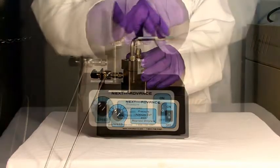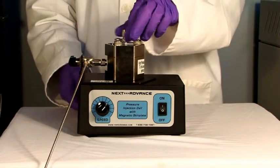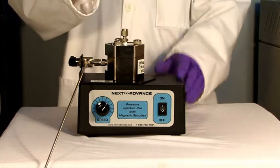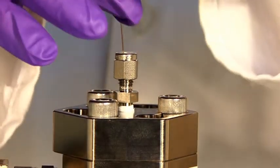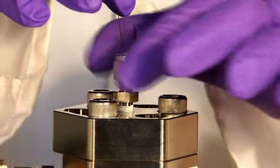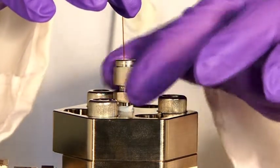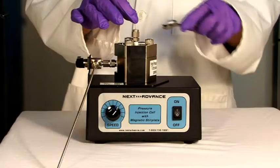To insert the capillary, loosen the nut covering the ferrule using a wrench. Slide the capillary through the small hole in the ferrule until it reaches the bottom of the sample tube. Pull up slightly to avoid blocking the capillary. Once the capillary is in place, tighten the nut.